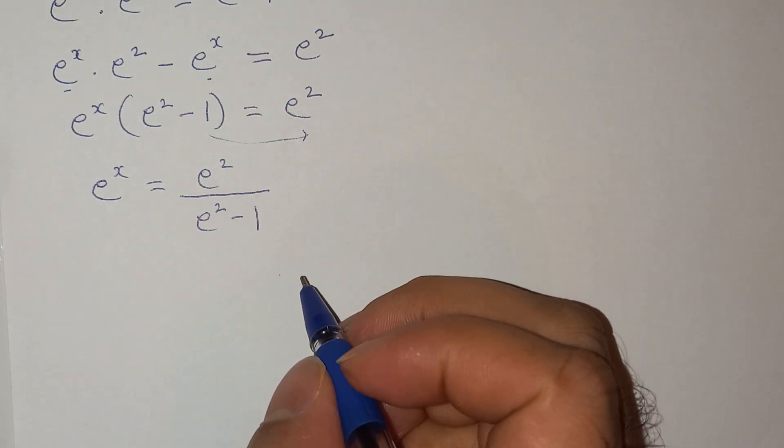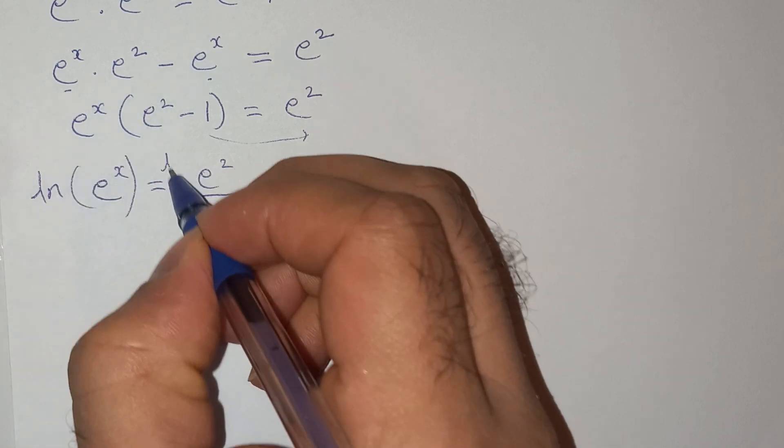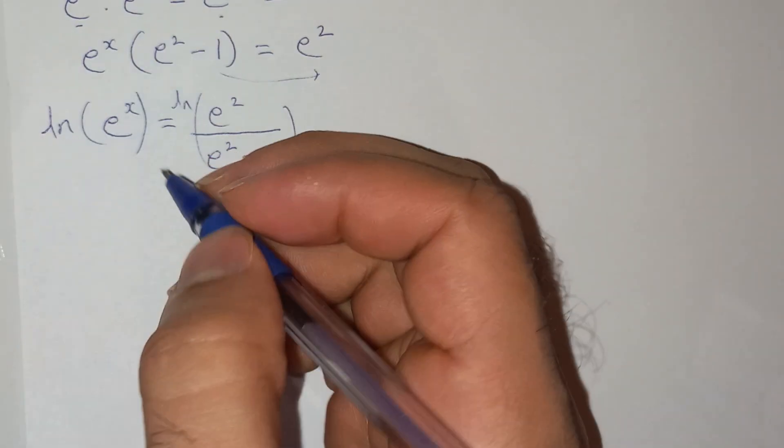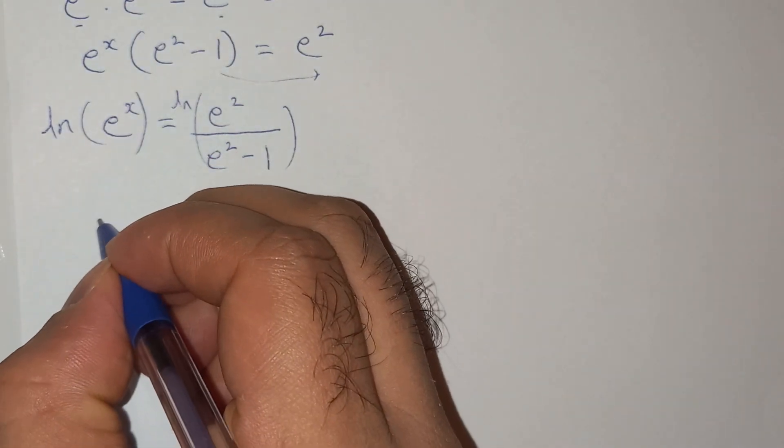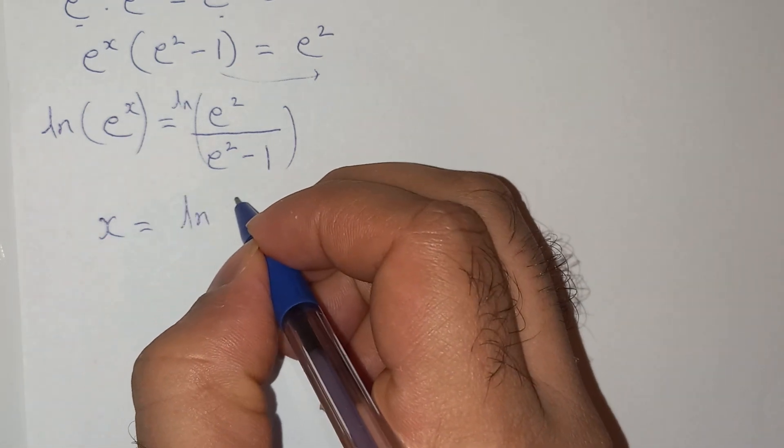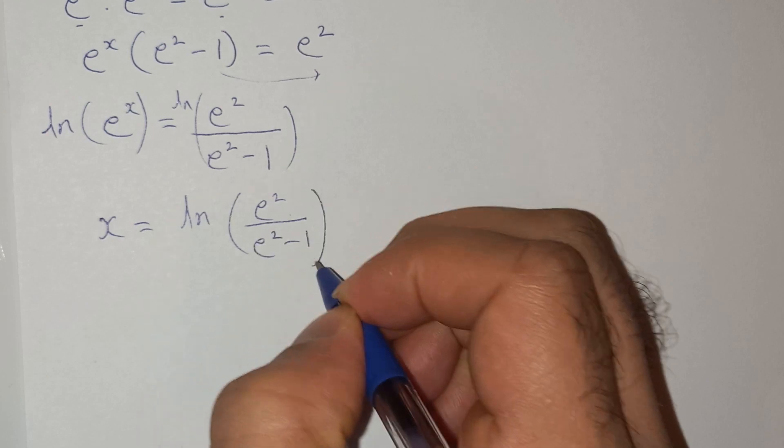Now we can take natural logarithm on both the sides. So this will be log of e power x will be x, and this will be log e square divided by e square minus 1.